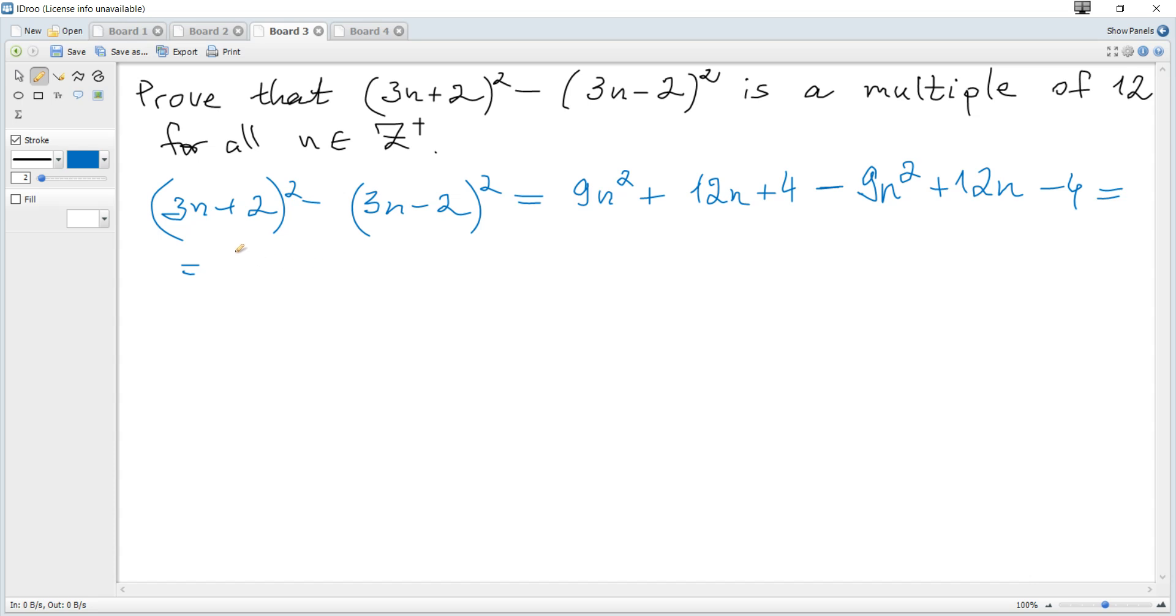We can see that it becomes just 24n. Since n is a positive integer, we can represent it as 12 multiplied by 2n, and 2n will also be a positive integer.